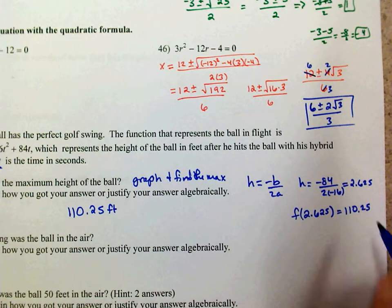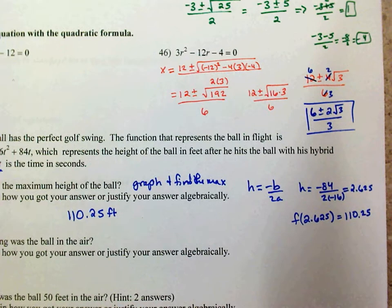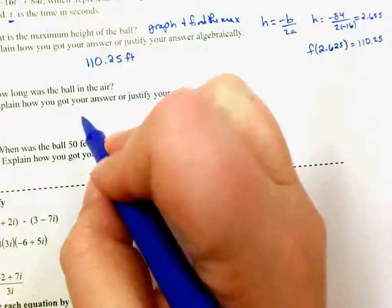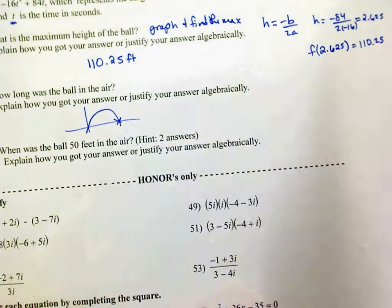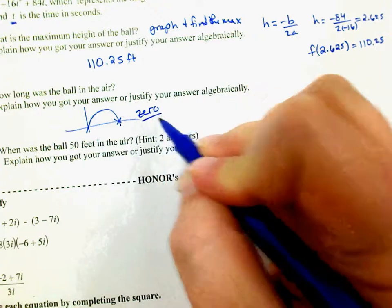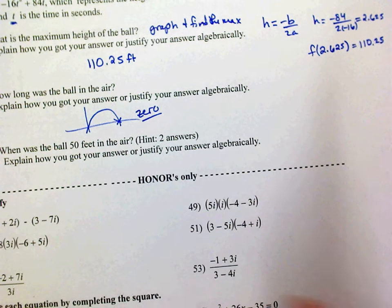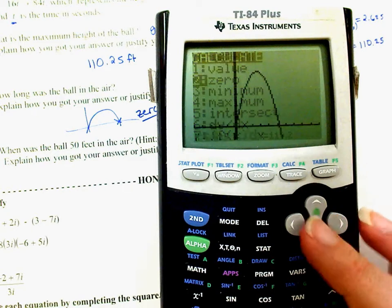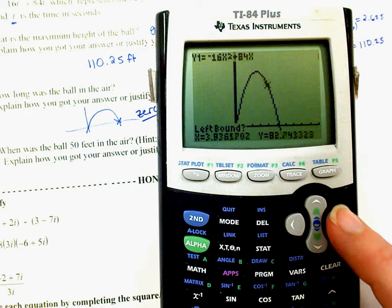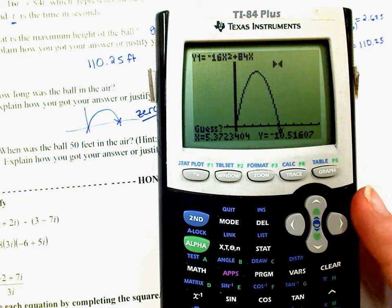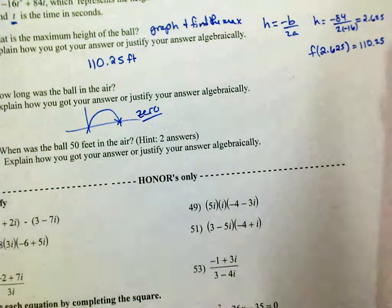How long was the ball in the air? Find when Y = 0. Go Second, Calculate, Zero (number 2). Go to the left of the x-intercept, press Enter, then to the right, press Enter, Enter. The answer is x = 5.25 seconds.